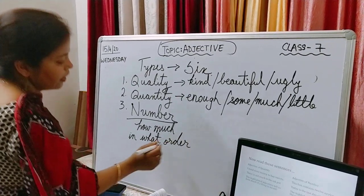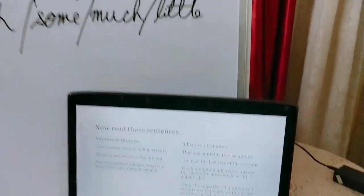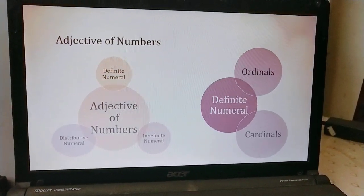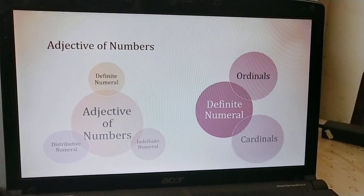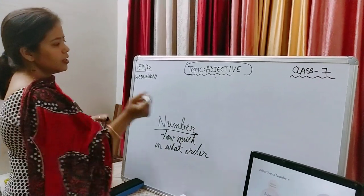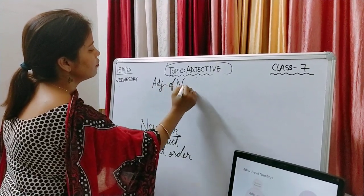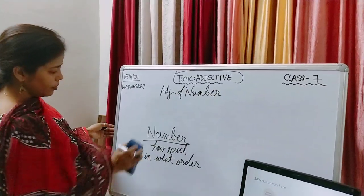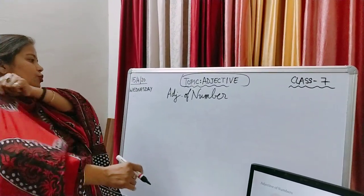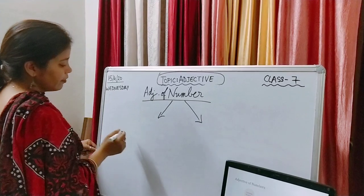These highlighted adjectives answer the question 'how many' or 'in what order.' Number will talk about how many and in what order — whether it is the second, third, last, or whether you still have more days. Now this is very important: when I spoke about quality and quantity, I did not talk about any subtypes. But when we come to number, it has two types.